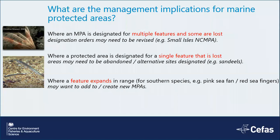Where an MPA is designated for a single specific feature and that feature is lost, that might lead to abandonment of the site and alternative sites might need to be found. In the UK, an example is the lesser sand eel at Turbot Bank Nature Conservation Marine Protected Area off the northeast coast — it's the only feature protected there. There's been a lot of discussion about the potential impacts of climate change on lesser sand eel, including what that might mean for sand eel as a prey species for UK seabirds. Where a feature expands its range, with southern species moving in, we might also need to think about changing designations in response.